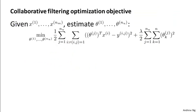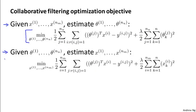One of the things we worked out earlier is that if you have features for the movies, then you can solve this minimization problem to find the parameters theta for your users. And then we also worked out that if you are given the parameters theta, you can also use that to estimate the features x by solving this minimization problem.